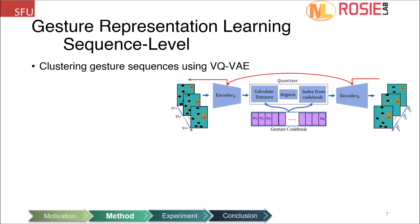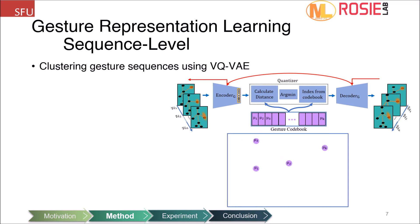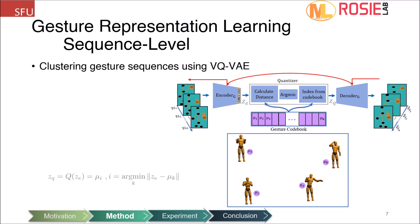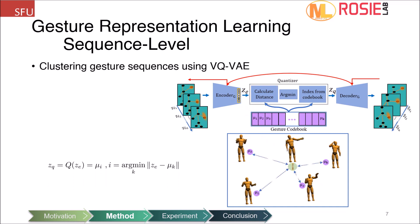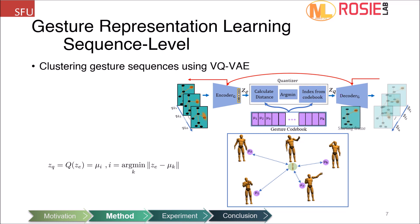The VQVAE has an encoder, a quantizer layer, and a decoder. The quantizer layer has a codebook that includes a set of gesture prototypes. First, it calculates the distance between the encoder output and the motion prototypes, then finds the nearest neighbor in the codebook and passes that to the decoder for the reconstruction process. In fact, we are using these prototypes as motion cluster centers. Finally, the decoder reconstructs the motion sequence frame by frame using the quantizer layer output and a starting frame.